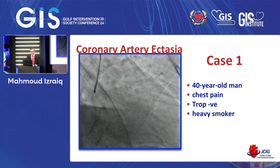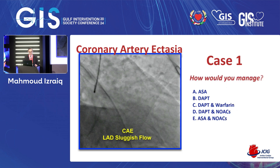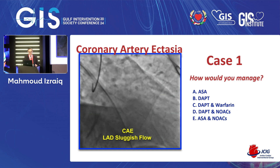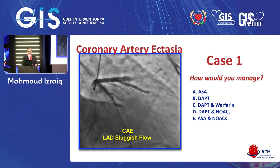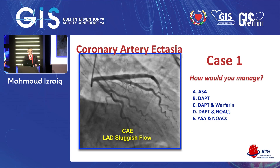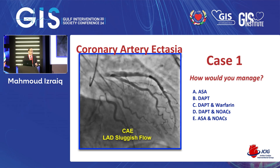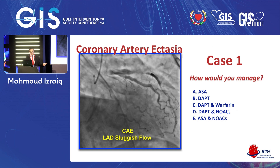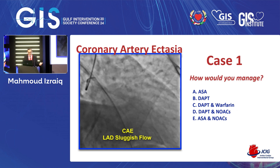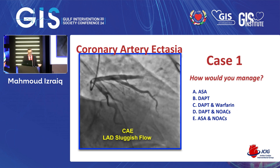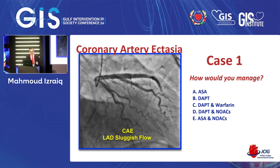This is a 40-year-old man who presented with chest pain, troponin negative, heavy smoker. If you look at the LAD, there are ectatic vessels with sludge flow. What to do? How to manage? Aspirin? Dual antiplatelet therapy with no anticoagulation? What do you think?